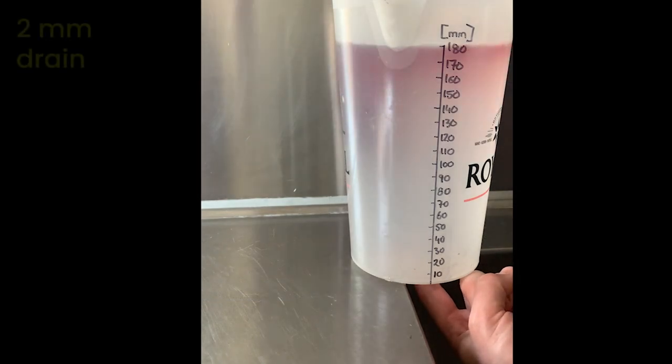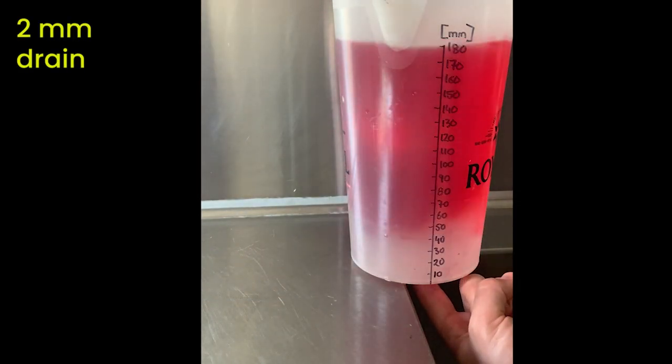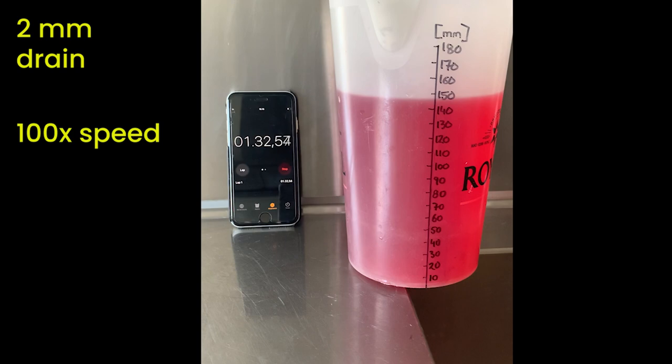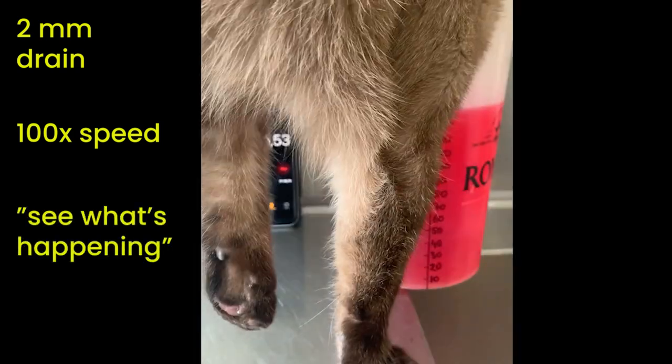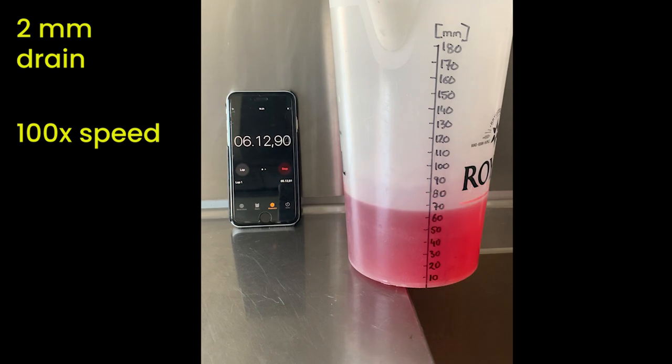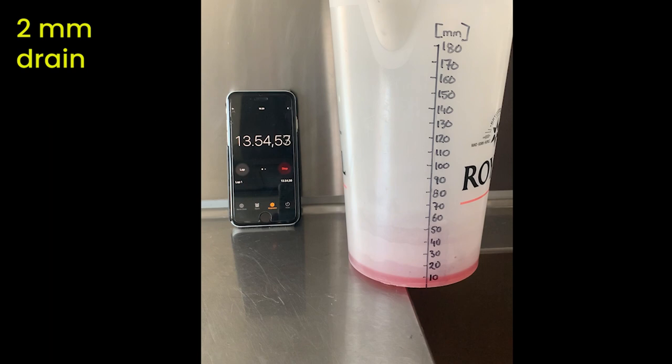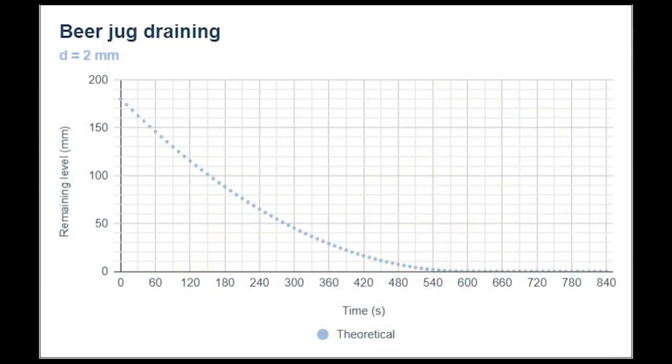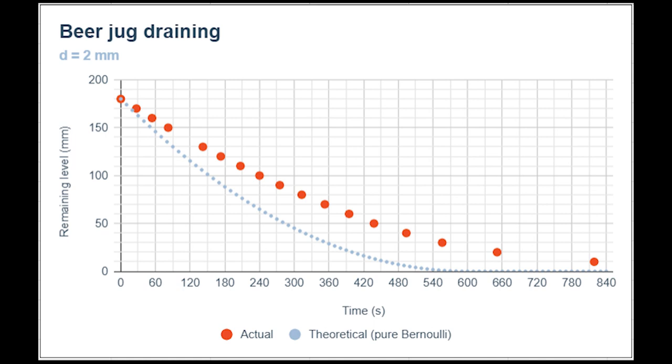I've added some food coloring to better be able to see what's happening. So I'm not going to stuff around below a level of 10 millimeters because there will always be something left in the jug, but you can see that it actually took 14 minutes instead of the 10 minutes that I predicted to empty the jug. If we plot the experimental points from the video, you can see the general shape is fine but the jug drained a lot slower than I predicted.